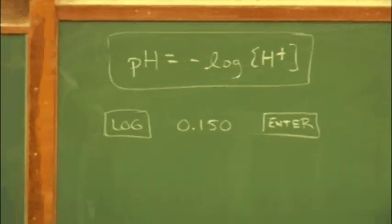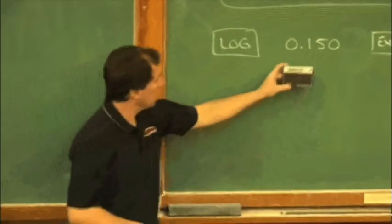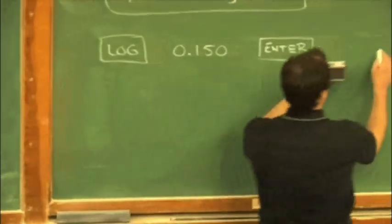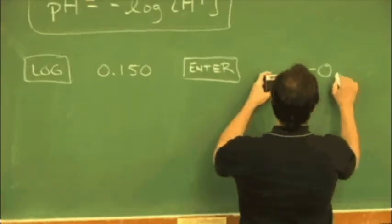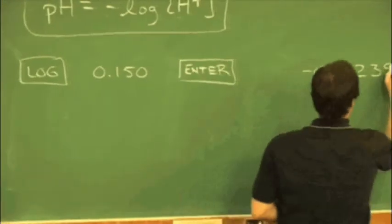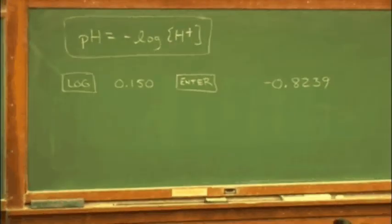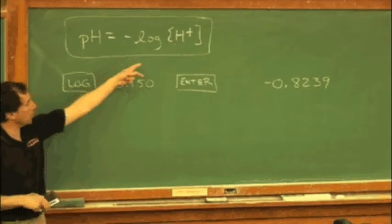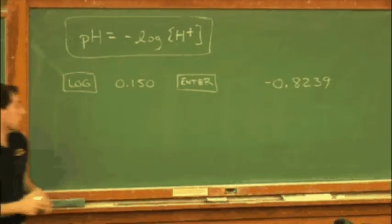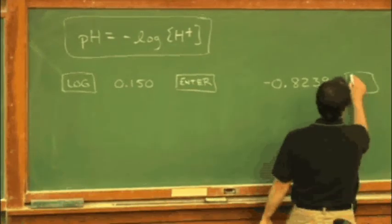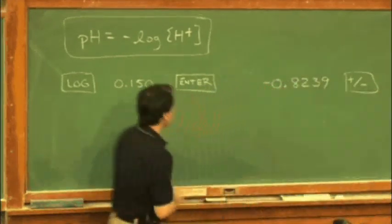What we're looking for is we're looking for the log of 0.150. My calculator is going to return this value, negative 0.8239. Now, that would be just fine if the formula for the pH was to take the log of the hydrogen ion, but we need to change the sign. So I'm going to go ahead and change the sign here on my calculator. Maybe hit the plus or minus button.